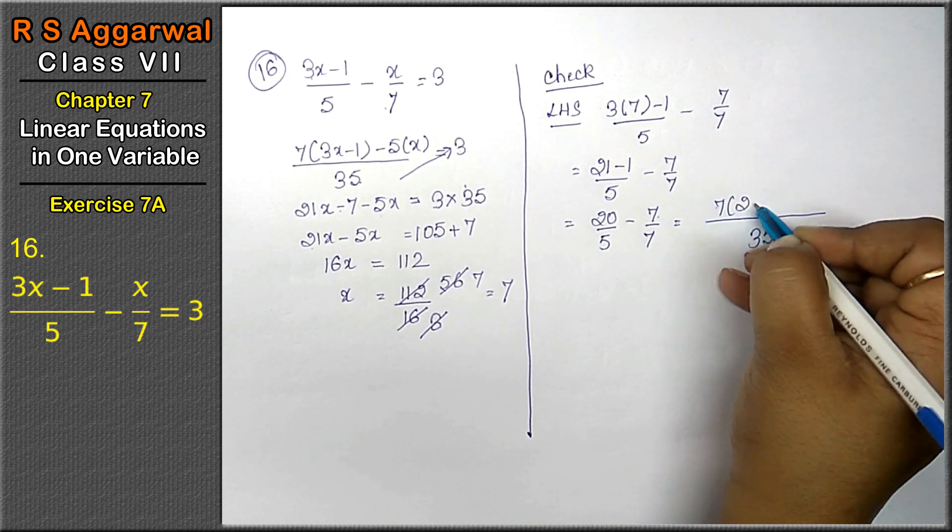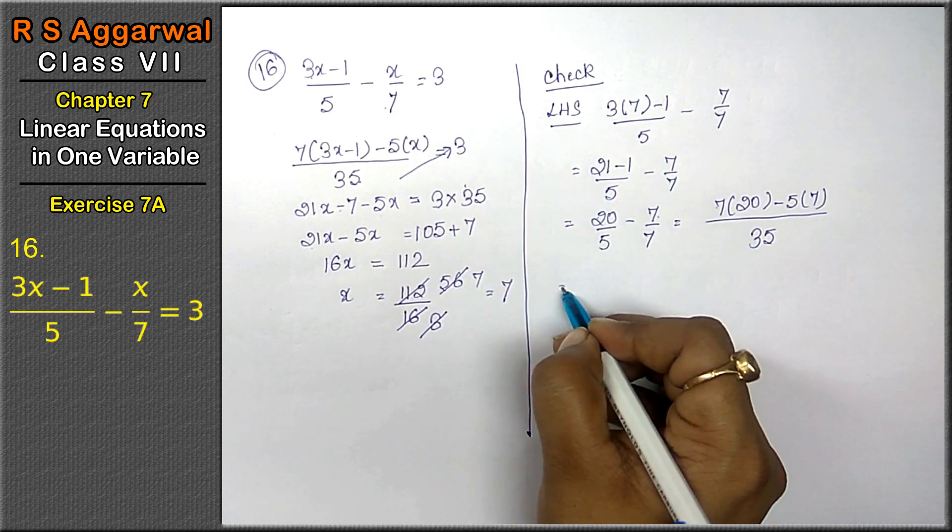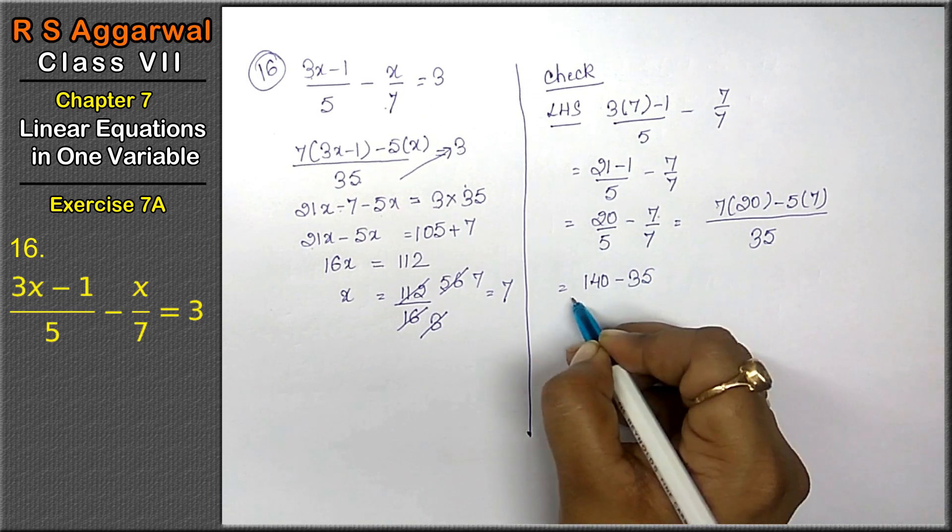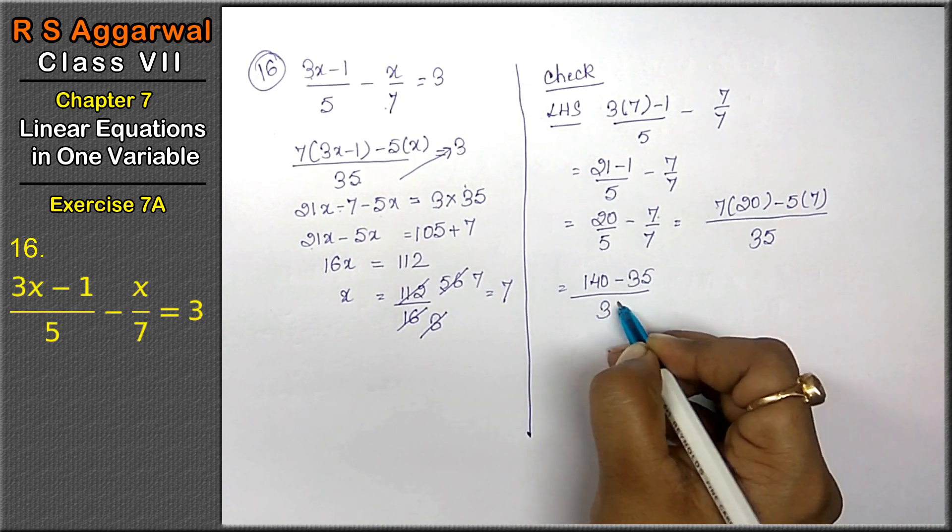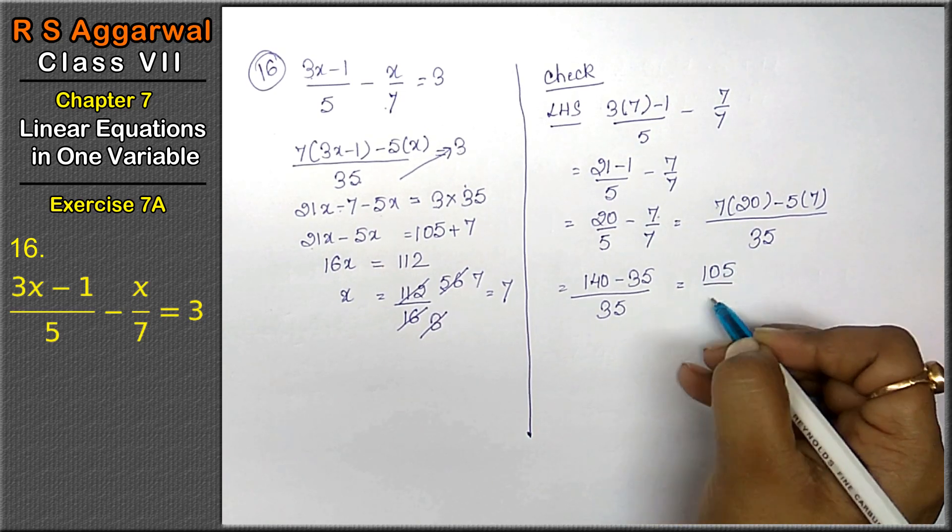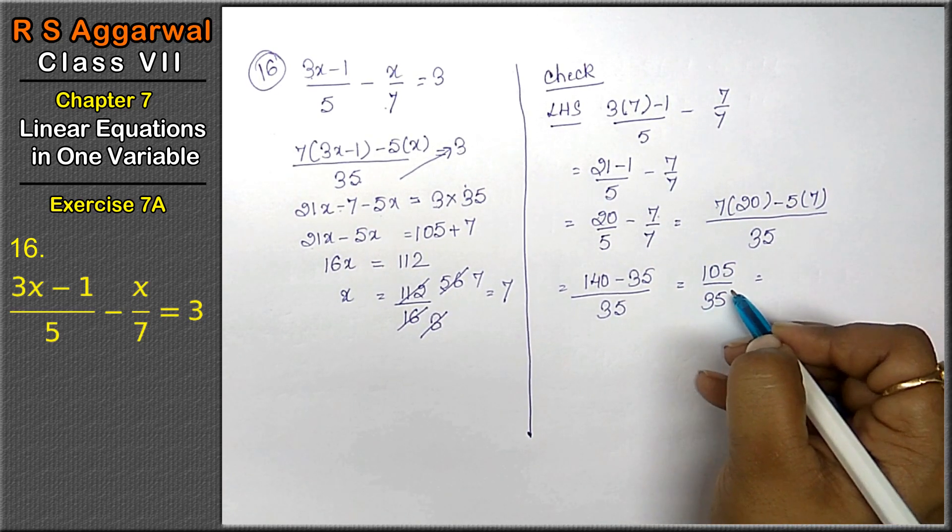7 into 20 minus 5 into 7. That means 140 minus 35 upon 35. 105 upon 35.